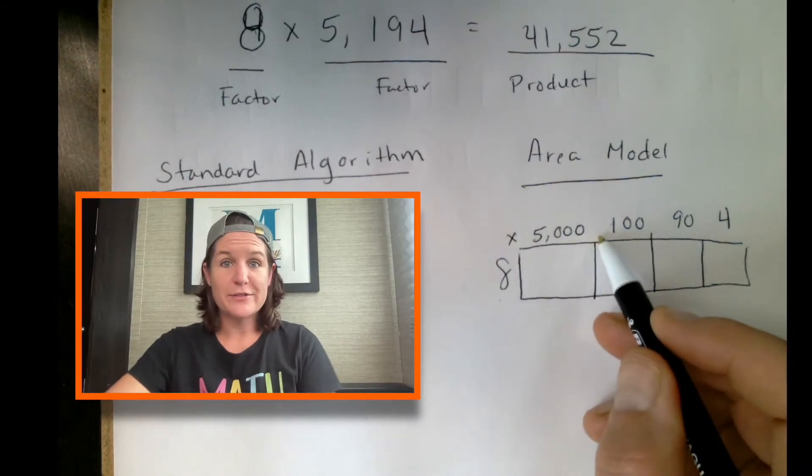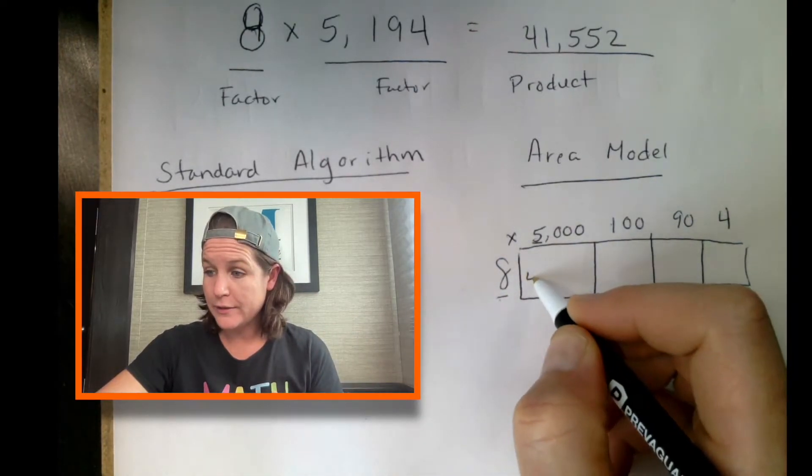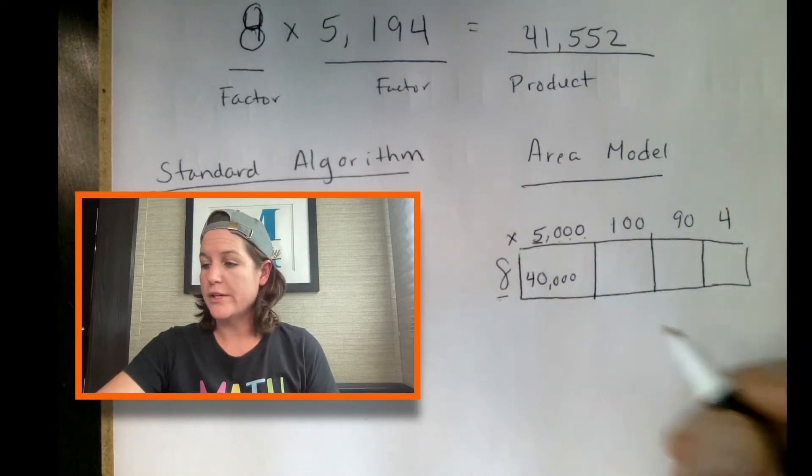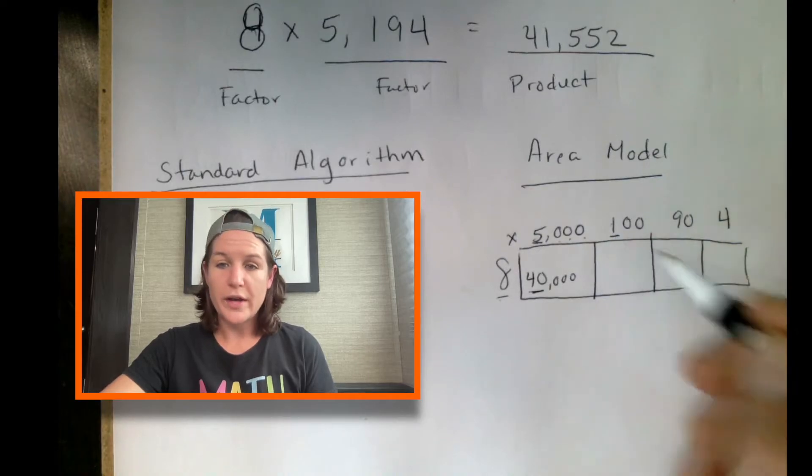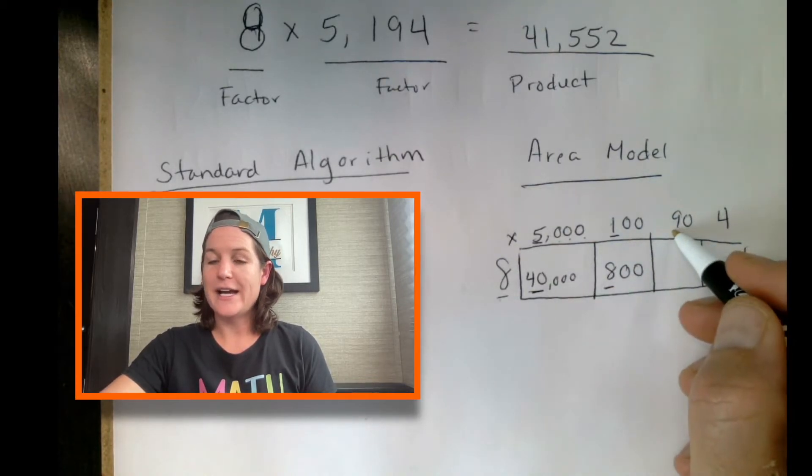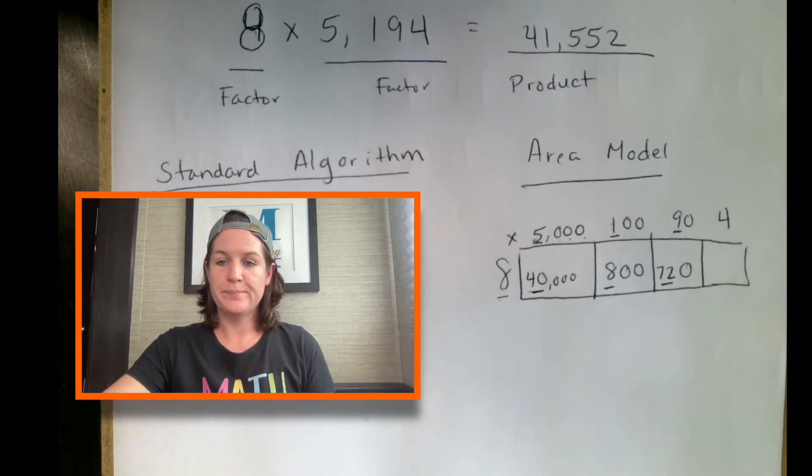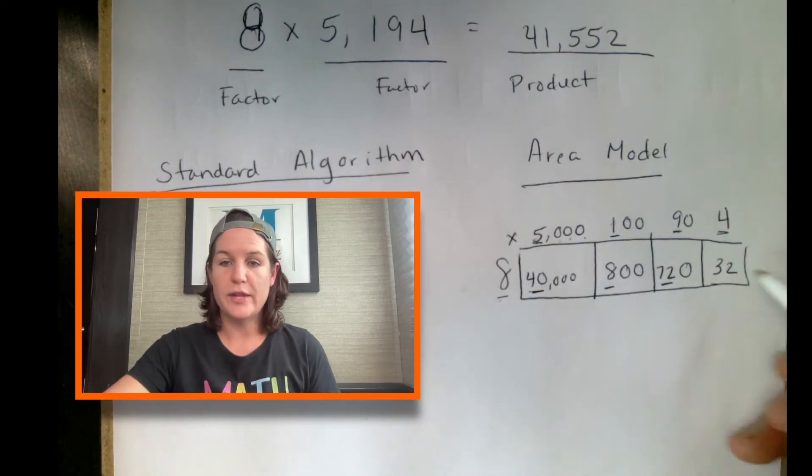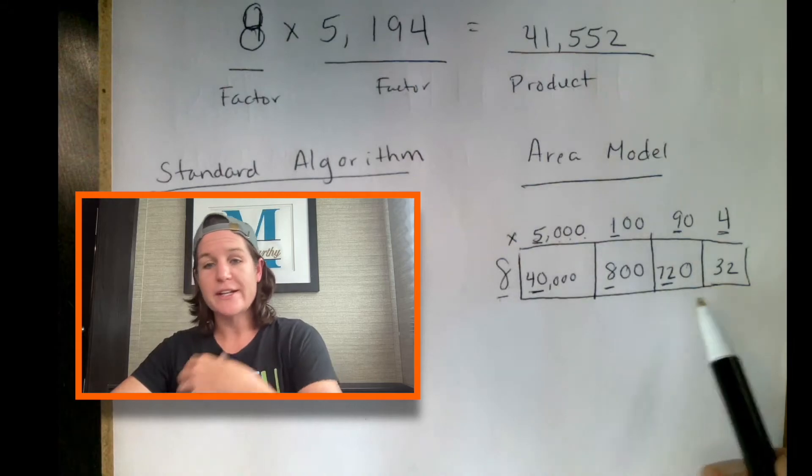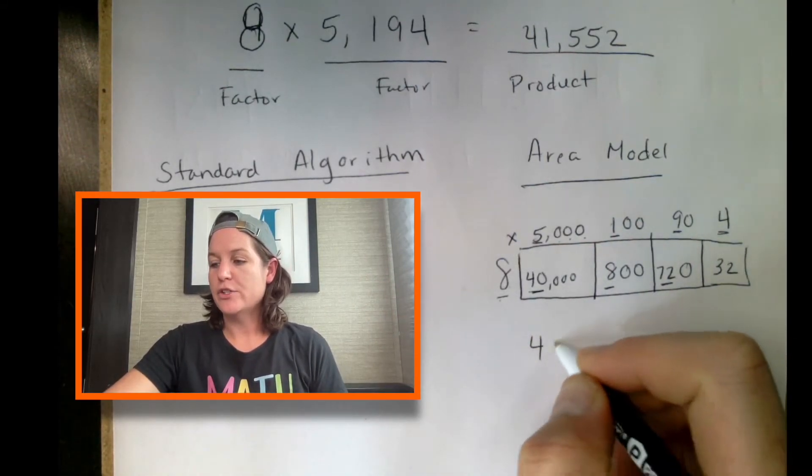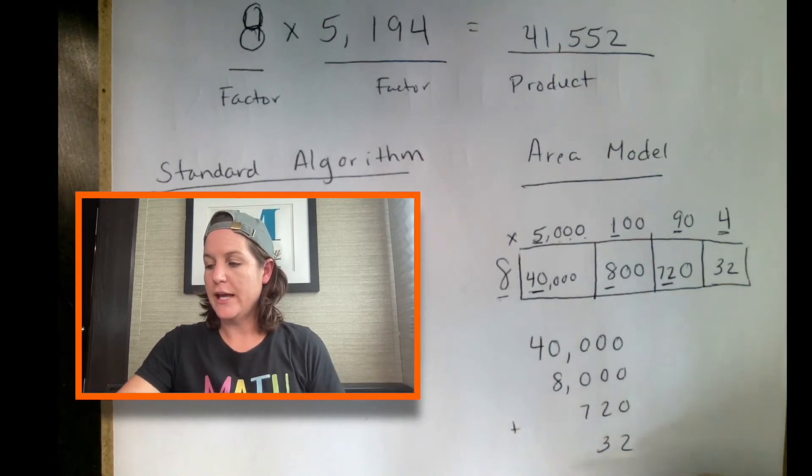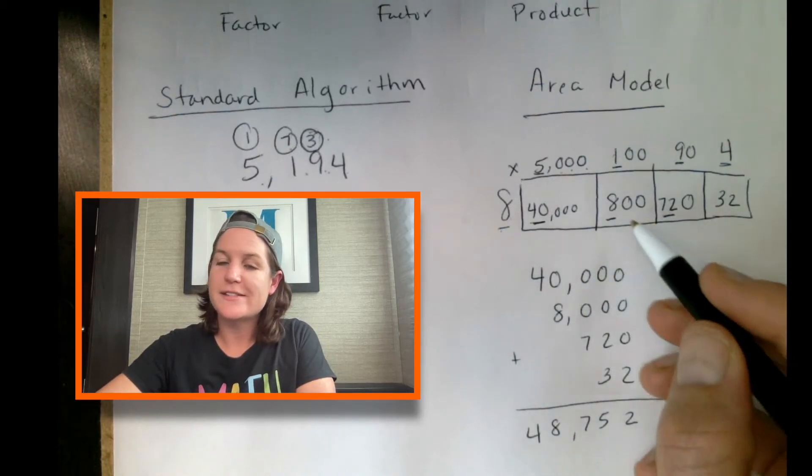And what we're going to do is take 5,194 and expand it out. So we would have 5 is in the thousands place, it has a value of 5,000. We've got 1, which is in the hundreds place has a value of 100. We have 9 is in the tens place has a value of 90. And we have 4 in the ones place. And what you do now is you just multiply 8 times all of these. So we have 8 times 5,000 is really like 8 times 5, which would be 40. And because we're multiplying with zeros in the remaining place values, we can just attach those at the end. So 40,000. 8 times 100, or 8 times 1 would be 8. We've got two zeros. So 800.